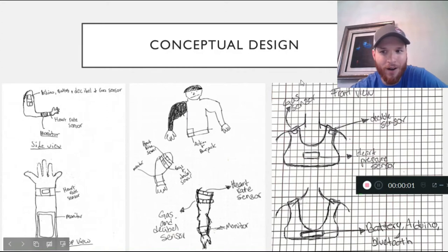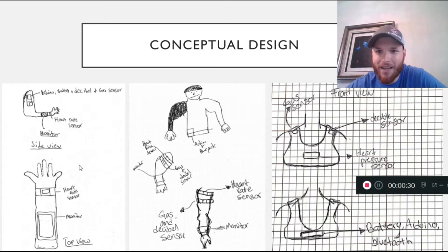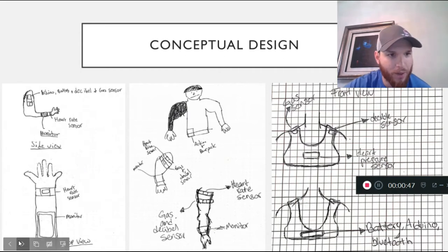Here are our conceptual designs starting from left to right. The first design was to have the monitor and heart rate sensor placed on the forearm and the Arduino located around the shoulder. The second design was similar, but the sensor located on the upper bicep. The third design was to make a vest that contained the Arduino, battery, and heart rate sensor. We ended up going with the first design.